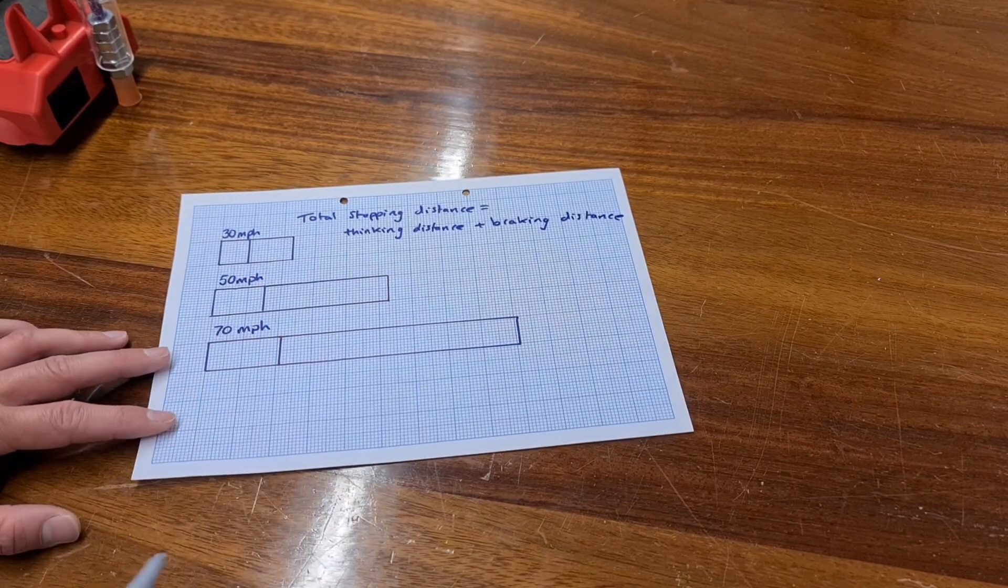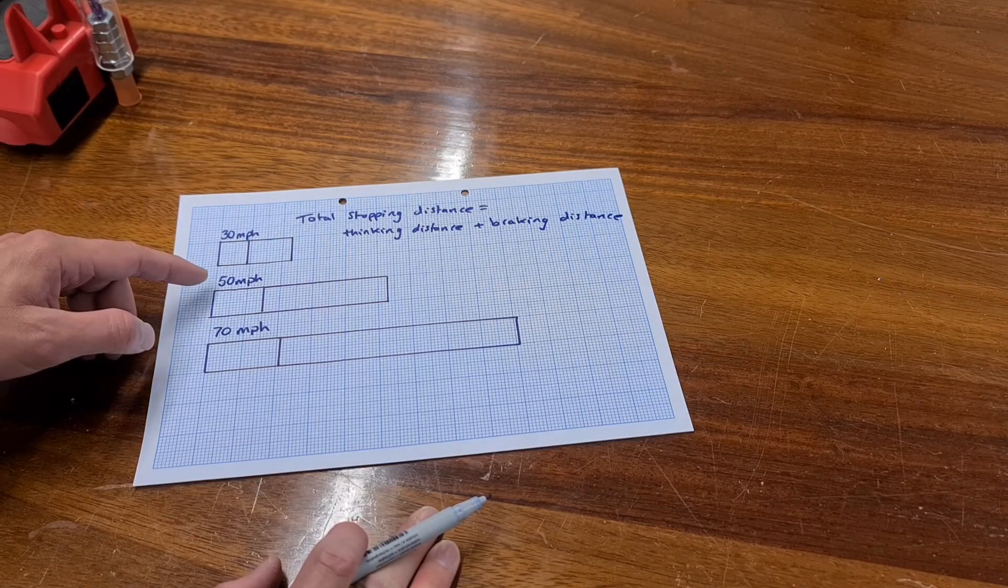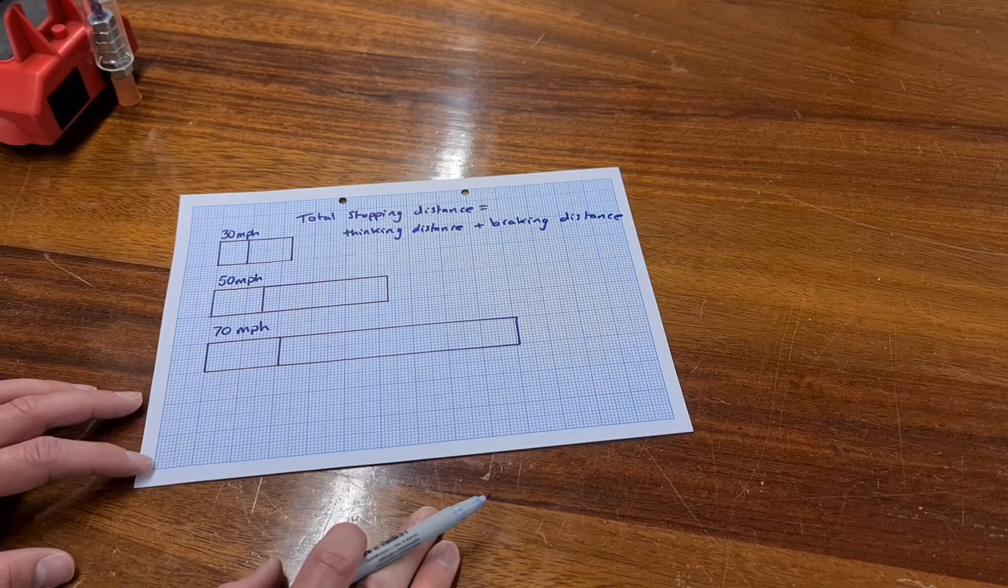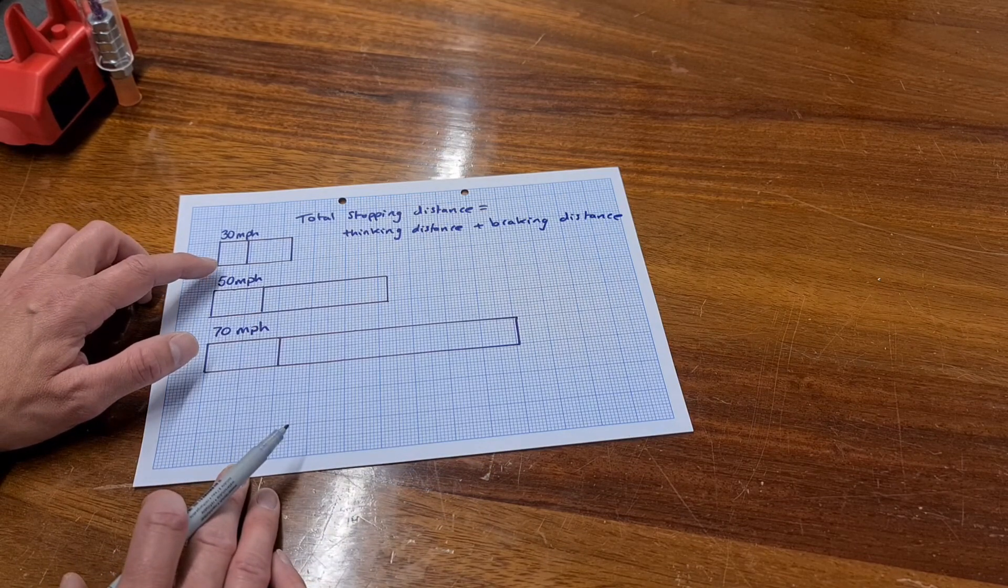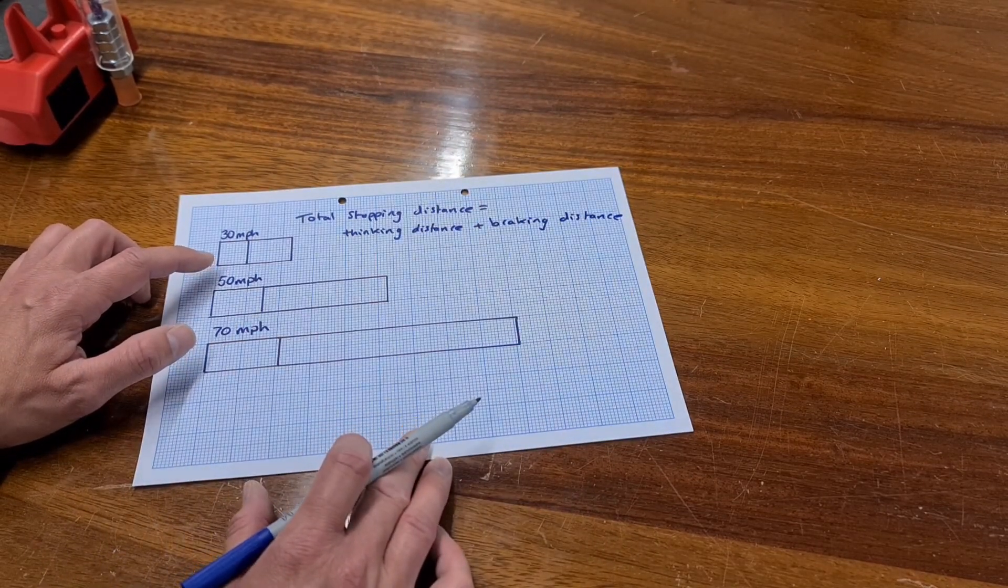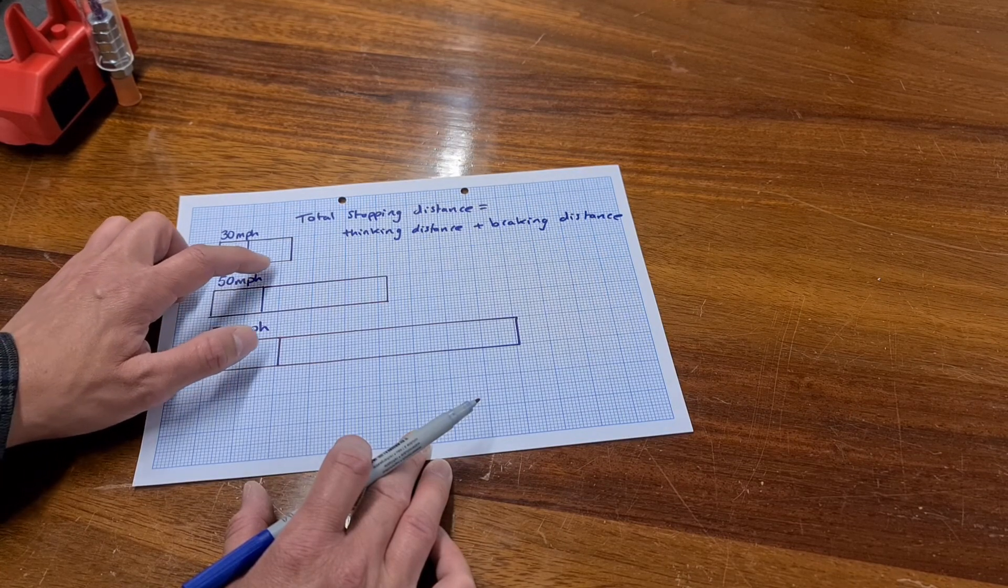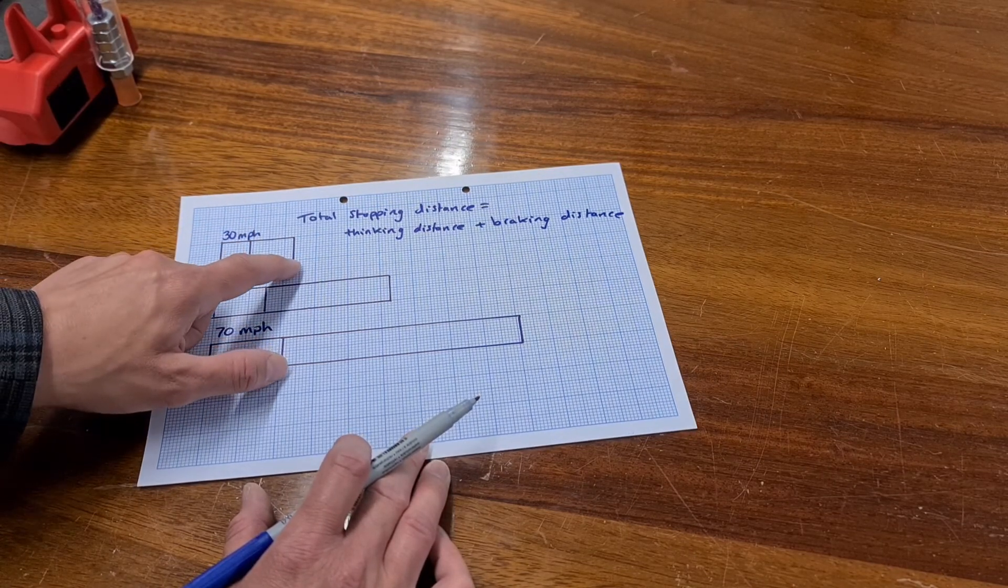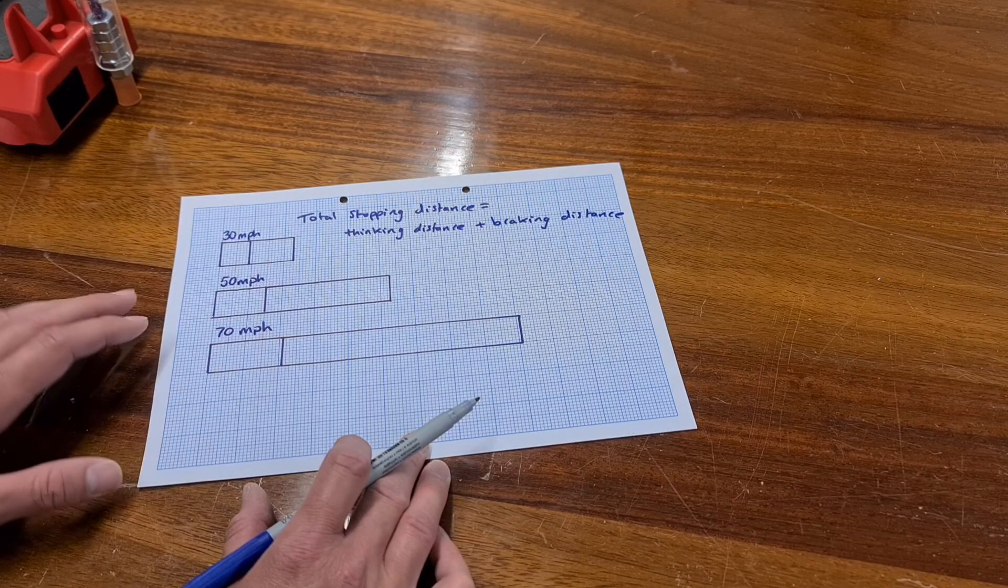So here we have three different situations represented. The first one is a car driving at 30 miles an hour, then 50 miles an hour and then 70 miles an hour. And the first box represents how far that car has travelled whilst thinking. So this point here is the place in the road where the driver first notices a reason for braking. An animal running out in front of them or whatever. And this is the point where they then hit the brakes. All of the rest of the section after that is whilst the brakes are being applied to the point when the car actually stops. So the first box represents the thinking distance, the second box represents the braking distance.